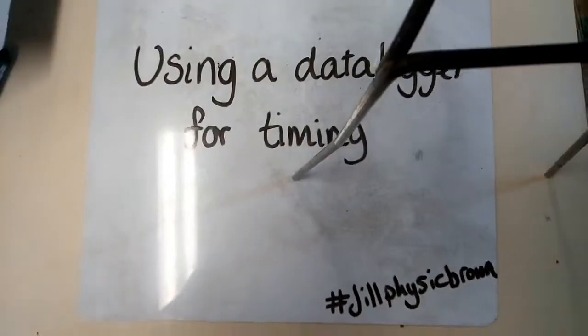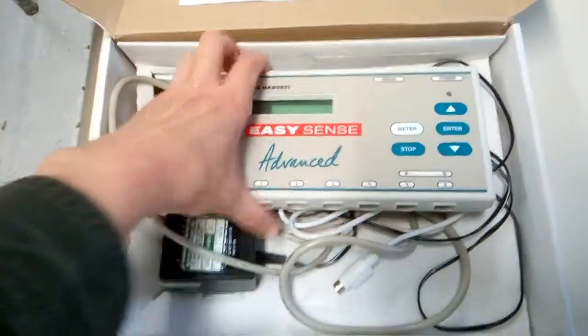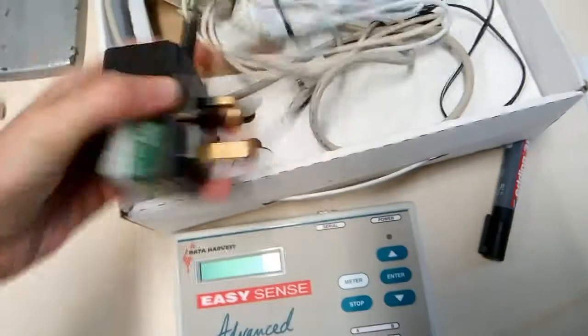To start with, school data loggers come in a box like this, Data Harvest, and look like this. If you get your data logger out of the box, you also need the power supply that goes with it.